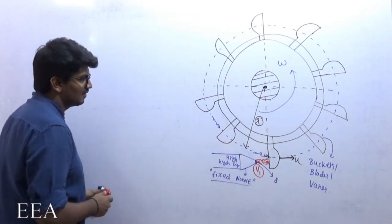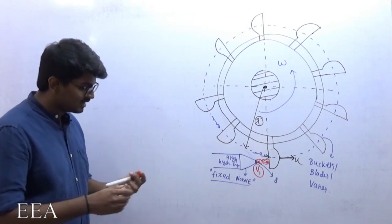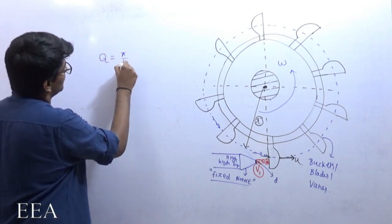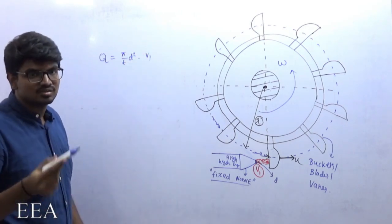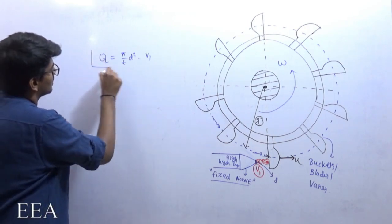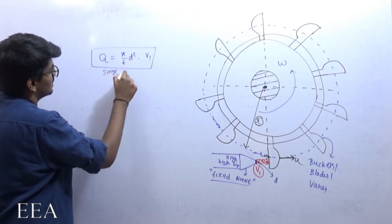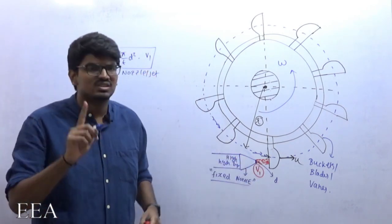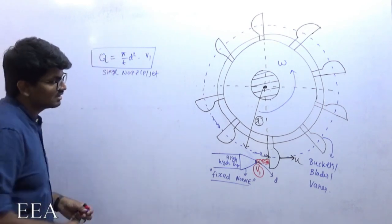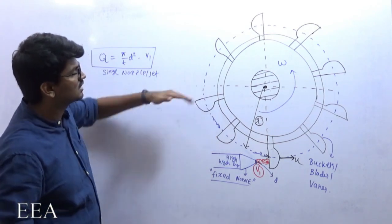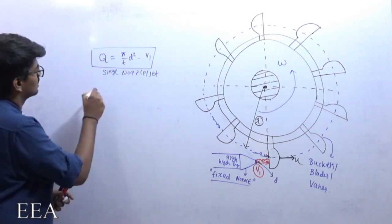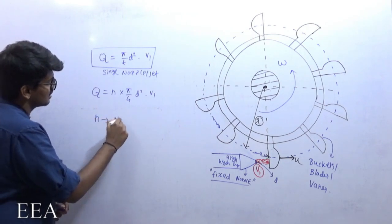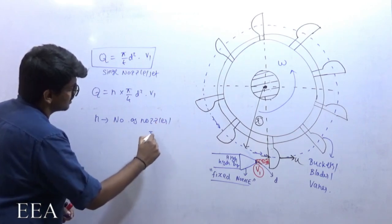When discussing the Pelton wheel, the discharge of fluid coming out of the nozzle is Q = π/4 × d² × V1, where d is the diameter of the nozzle. This is applicable only for a single nozzle, which produces a single jet. If there are n number of nozzles, then discharge will be equal to n × π/4 × d² × V1, where n is the number of nozzles or jets.